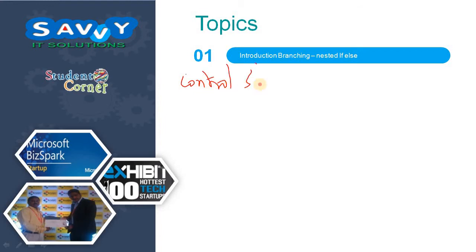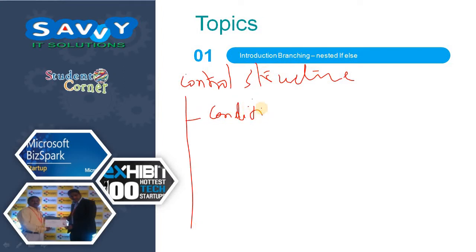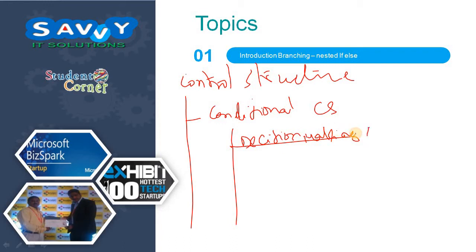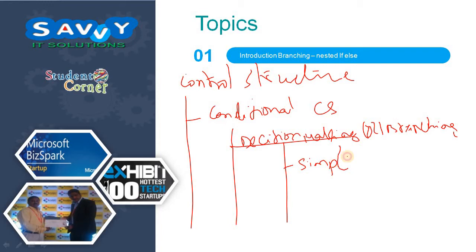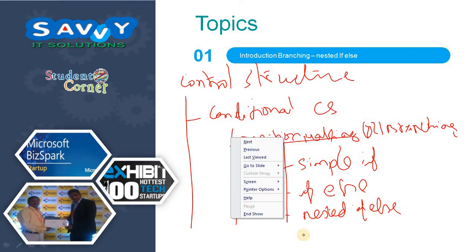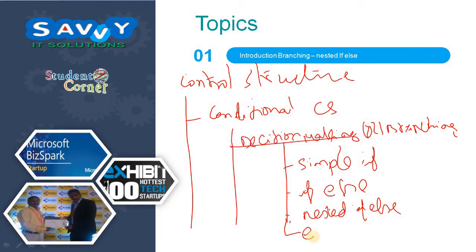Initially it is control structures. Under control structures we are learning conditional control structures, under which comes decision making or branching. Under this we have simple if, if-else, nested if-else, and finally else-if ladder. So now we are learning nested if-else.